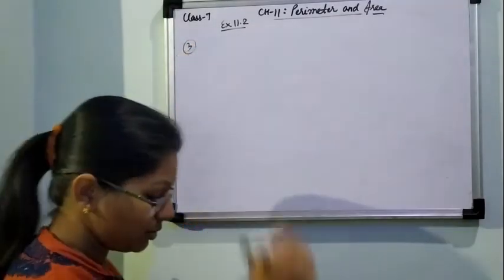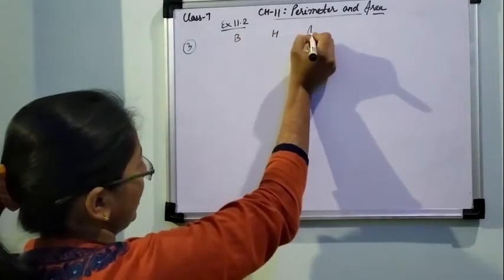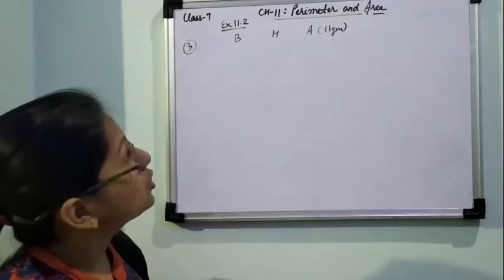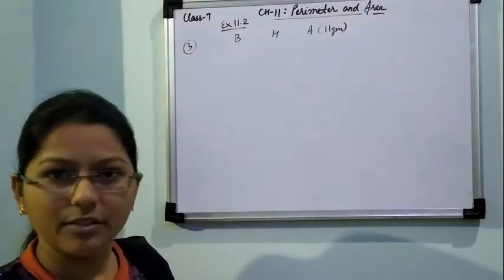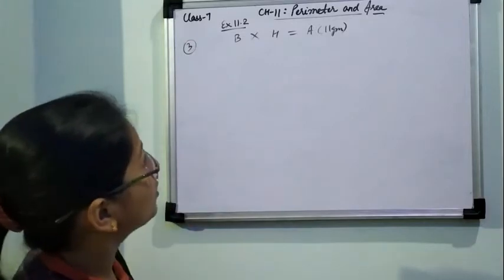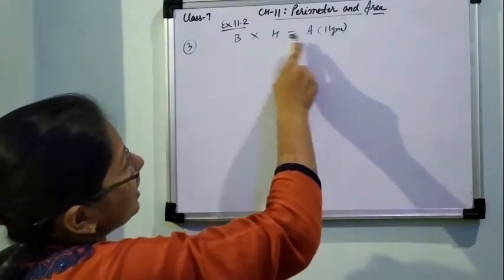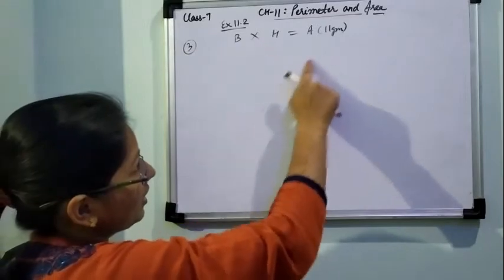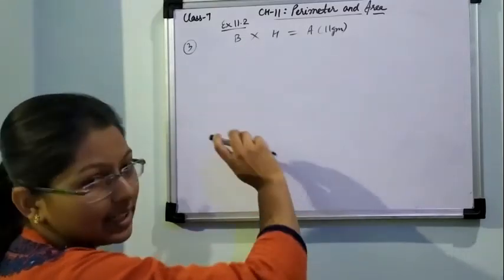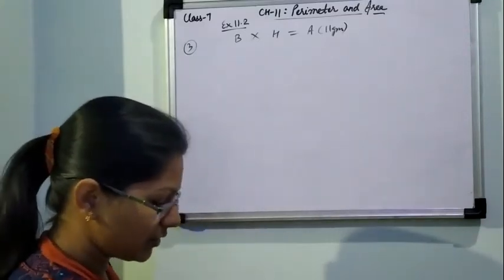Using these two formulas we will solve more questions. In question number 3, we find the missing value. A table is given with three things: base, height, and area, for a parallelogram. If any two are given, we can find the third. For parallelogram: base into height = area. If base and height are given, multiply for area. If area and height are given, divide area by height to get base. If area and base are given, divide area by base to get height — just like solving an equation.